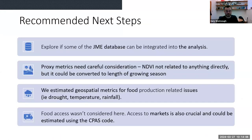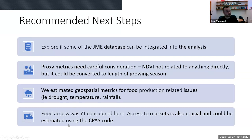As recommended next steps: given this was a short project, we want to look into the JME database again with a different version. We need to go back over the proxy measures and think more carefully — NDVI is not directly related to anything, so we want to think about what it means for growing period length and harvest timing. We also didn't consider food access at all; we have the ability to look at travel time to markets but didn't have market location information for these countries. So we've only looked at food production-related issues and not food access via spatial data — there's more work to be done.